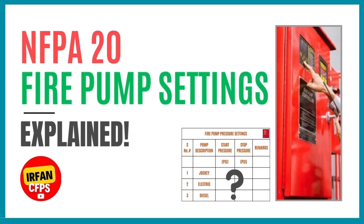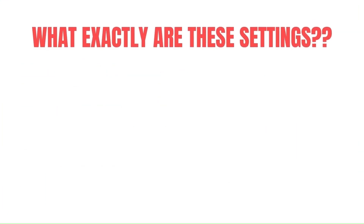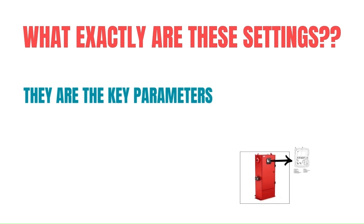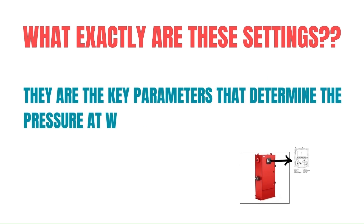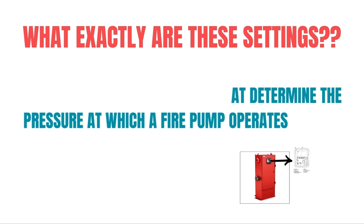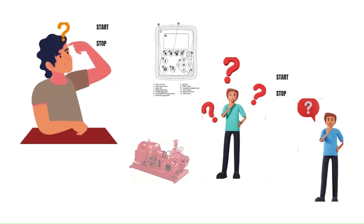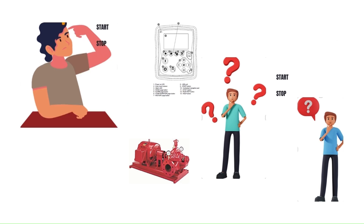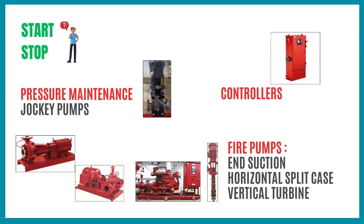Welcome to our video series on NFB820. Today we are going to discuss the most important aspect of fire pump operations: fire pump settings. These are the key parameters that determine the pressure at which a fire pump operates. We have received some questions on how to determine proper pressure settings for starting and stopping the pressure maintenance jockey pumps and fire pumps, which is required for effective system operation.